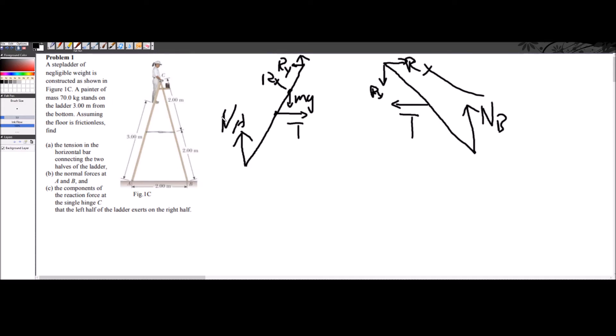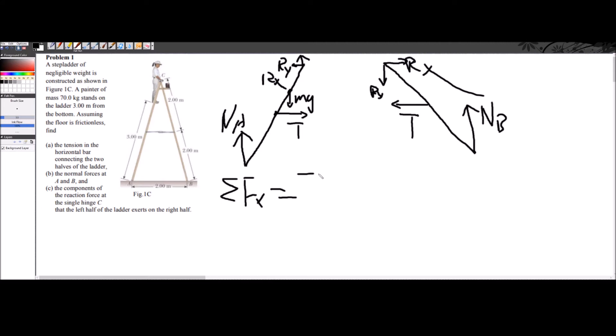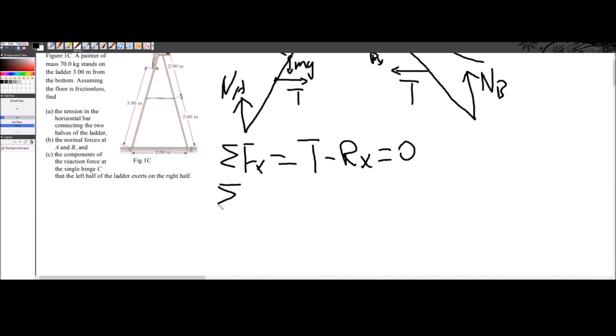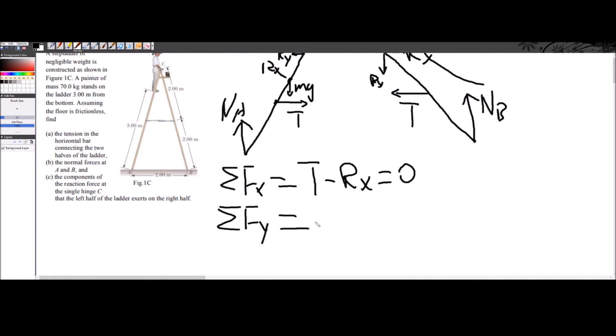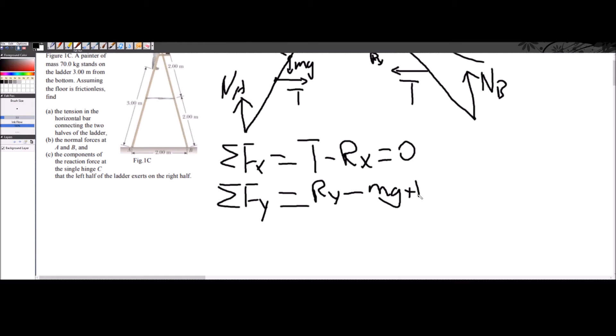So let's just write the net force equations for the left side. So we know for the left side, the sigma fx is just going to be equal to tension minus rx, and it's equal to zero. And for the y-direction, it's going to be equal to ry minus mg plus Na, it's going to be equal to zero.